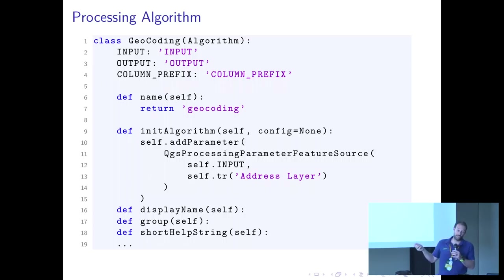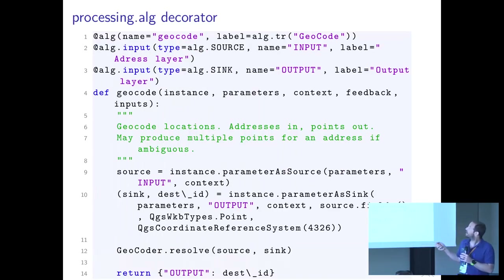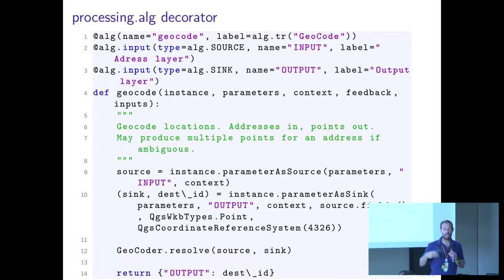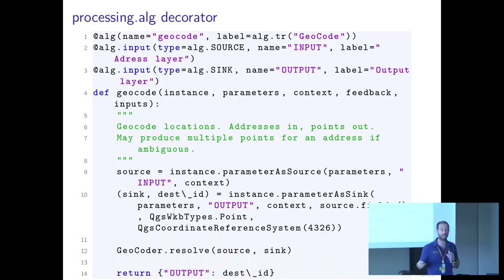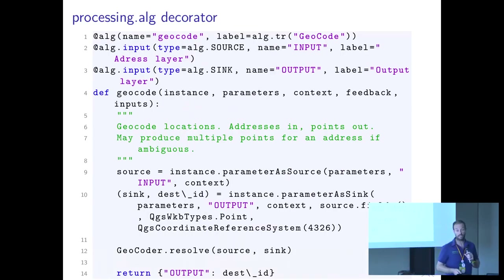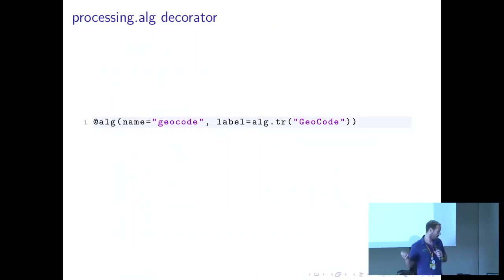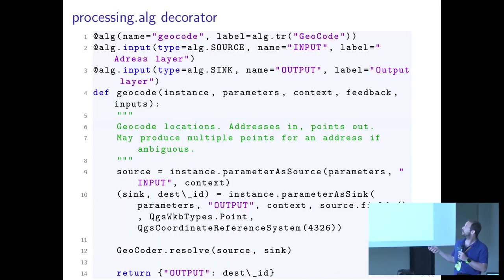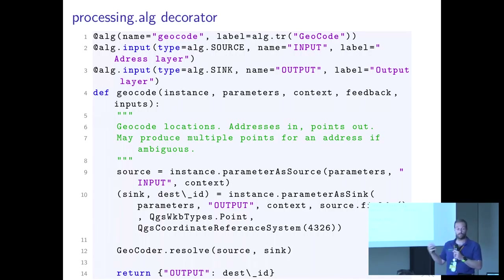This is the one that gets executed whenever you choose the algorithm from the processing toolbox. A super handy way if you have tools to be redistributed — you can also distribute them as plugins, just including the algorithm, so you can distribute a plugin that is nothing else than an algorithm provider. But just using add_alg is a much quicker, more Pythonic way to get the same thing done.